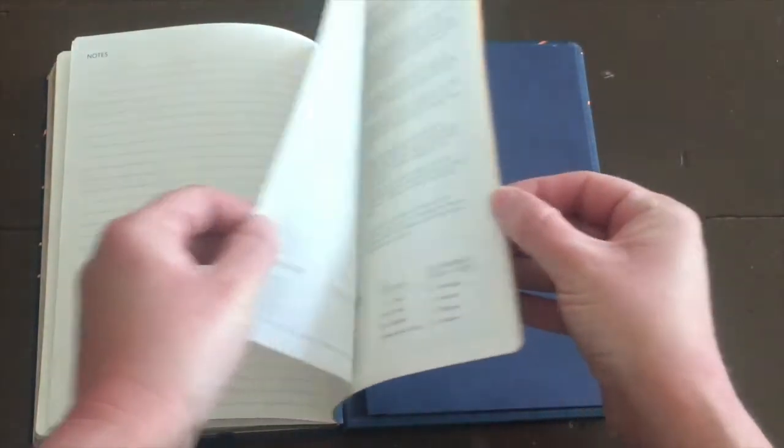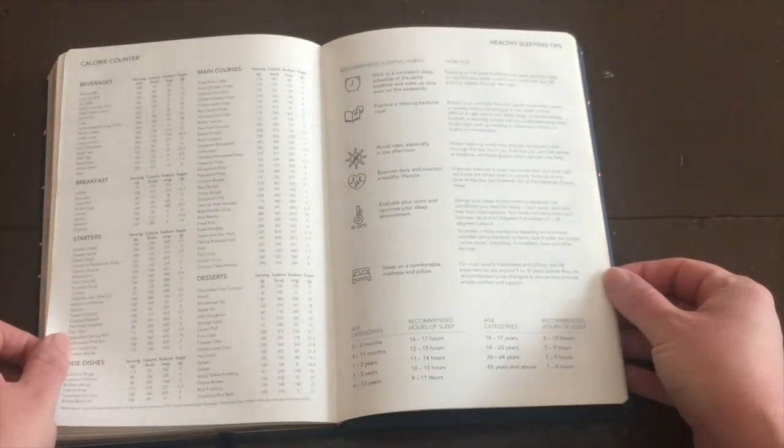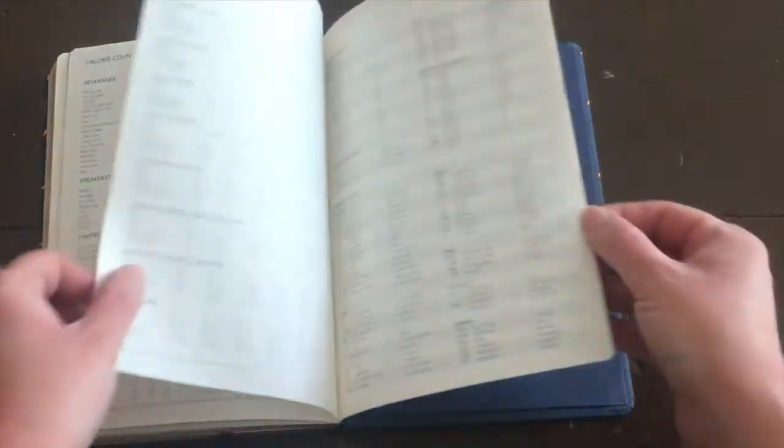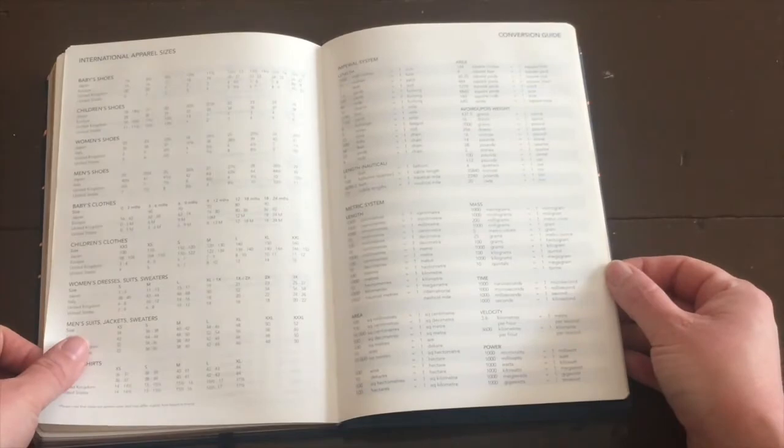you get to the helpful pages like your calorie counter, your healthy sleep tips, international apparel sizes, just like the smaller version of the diary. It has your conversions, your expenses tracker, your websites, travel wishlist, and global map like before.